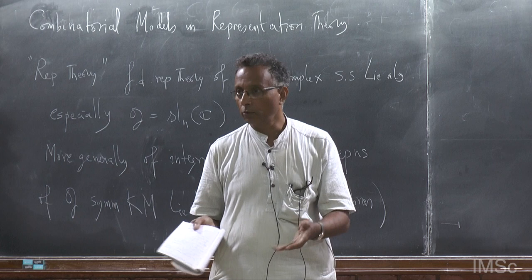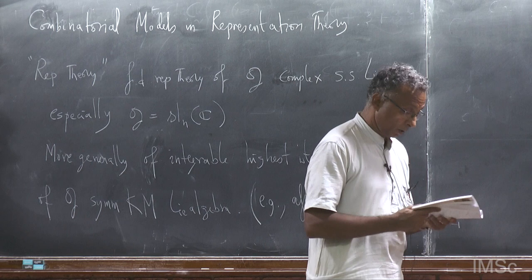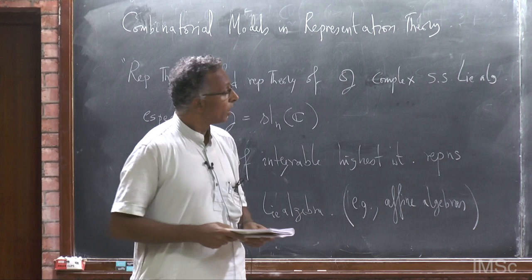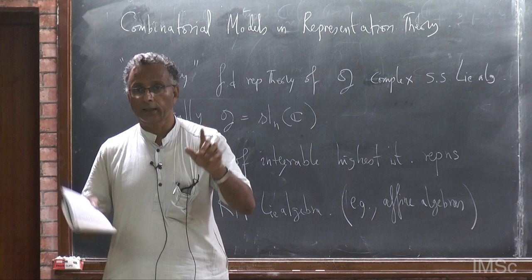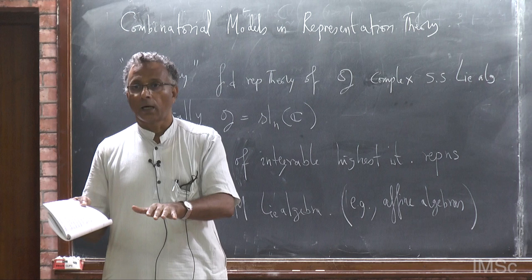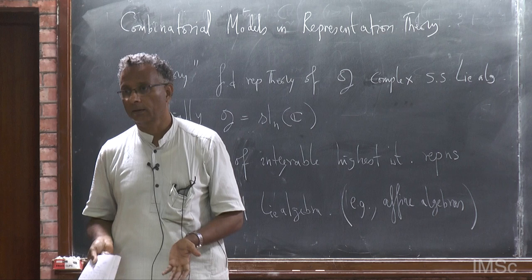The following must have been clear to you from Ravinder's lectures: tableaux — in particular semi-standard Young tableaux — and Gelfand-Zetlin patterns, which are given by bounding rows lambda_1 to lambda_n, these two are easily in bijection. And the paths that Vishwanath introduced, which we will see more of this week and next week, are a sweeping generalization of these models. Tableaux, which are equivalent to patterns, are subsumed by the theory of paths.